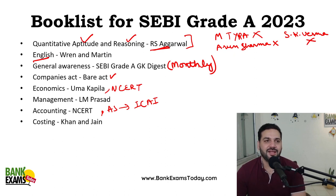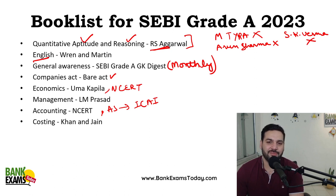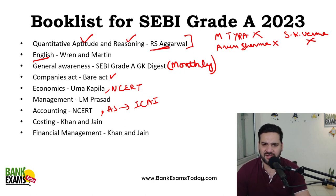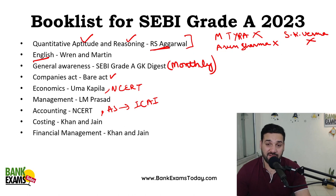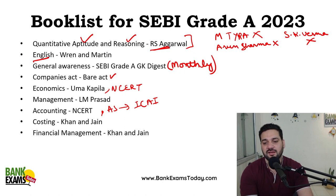For costing and financial management, Khan and Jain's book is really nice. Cost accounting and financial management accounting — there is a combined book by Khan and Jain and that is a really nice book, I personally recommend that. But there are a lot of lengthy questions in these books which you are not supposed to do, so they become sort of irrelevant.